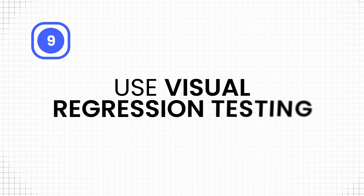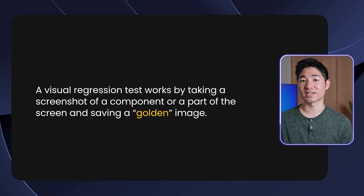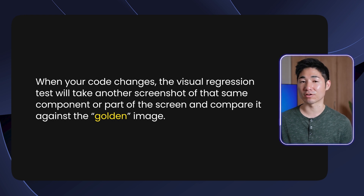Point number nine is to learn visual regression testing. There are several libraries for this like Cypress, WebDriver, and Storybook. My favorite is Storybook because it also serves as a documentation tool for component behavior while introducing screenshot testing. A visual regression test works by taking a screenshot of a component and saving a golden image; when your code changes, it takes another screenshot and compares it against that golden image. This makes it easy to catch visual bugs introduced through CSS changes, JSX changes, or modifications to business logic affecting what the user sees.